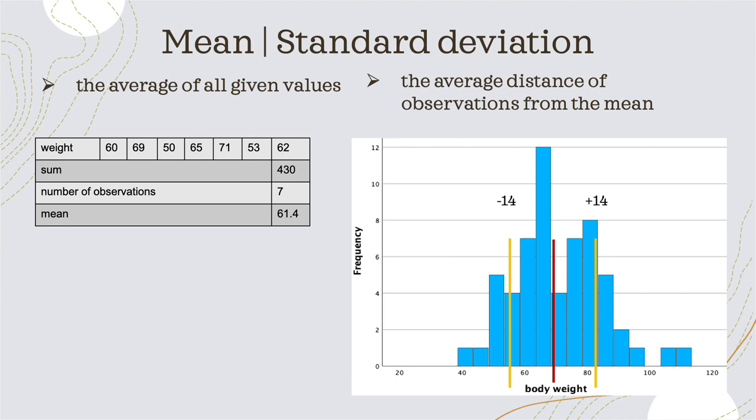Let me introduce the last measure of central tendency: the mean. The standard deviation is the measure of dispersion that comes with the mean. The mean is the average of all given values from our sample.